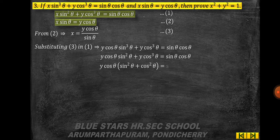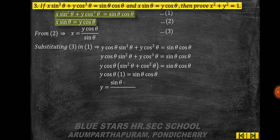Taking y·cosθ common: y·cosθ·(sin²θ + cos²θ) = sinθ·cosθ. Since sin²θ + cos²θ = 1, we get y·cosθ = sinθ·cosθ, therefore y = sinθ.